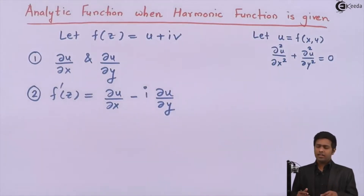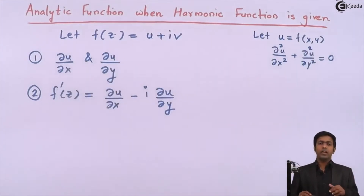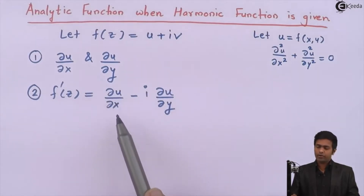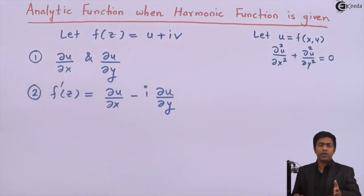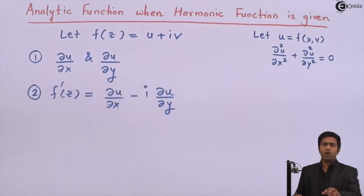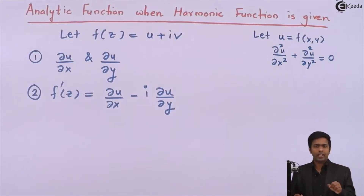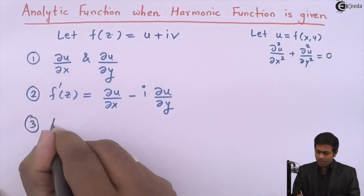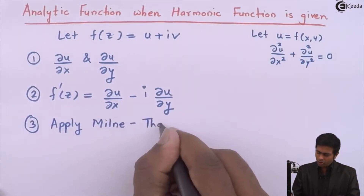The reason we need the next step is that u is a function of x and y, so ∂u/∂x and ∂u/∂y are in terms of x and y. Therefore f'(z) will also be in terms of x and y. But to find f(z), we need to integrate f'(z) with respect to z, which means we must express f'(z) in terms of z. To do this, we apply step three: Milne-Thomson's method.